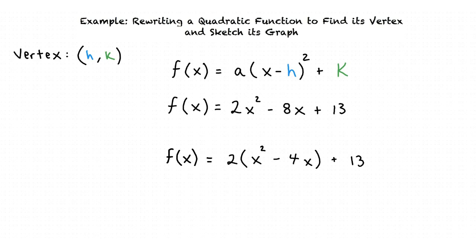Now we complete the square of the parenthetical expression x² - 4x. Since we have x² - 4x, we must add the quantity (-4/2)² inside the parenthesis. The quantity (-4/2)² equals 4, so the result is f(x) = 2(x² - 4x + 4) + 13.